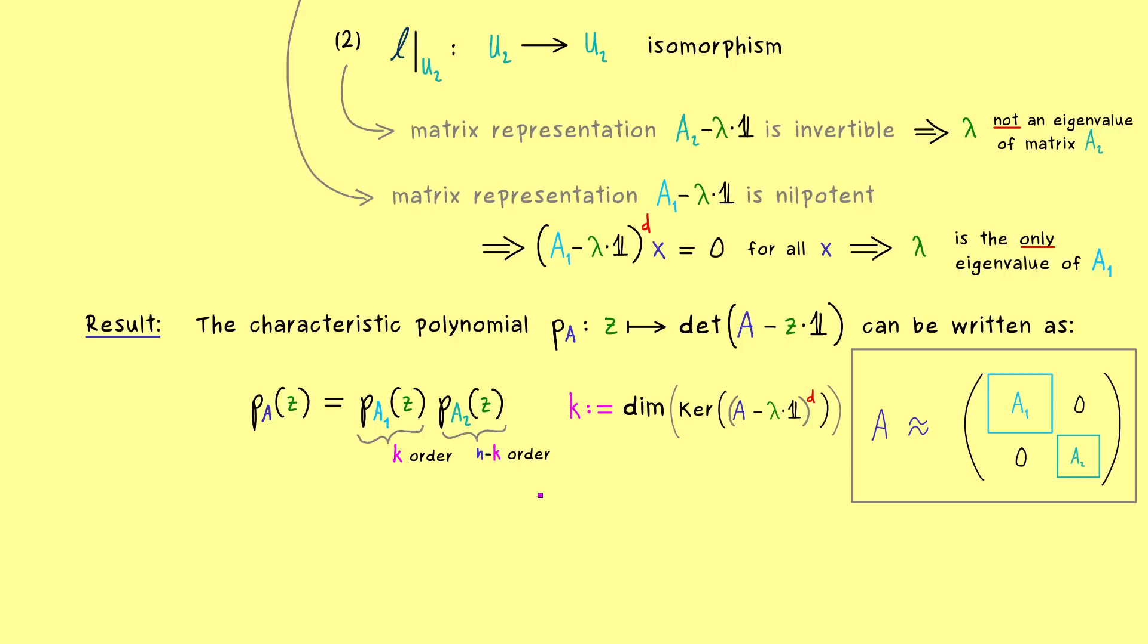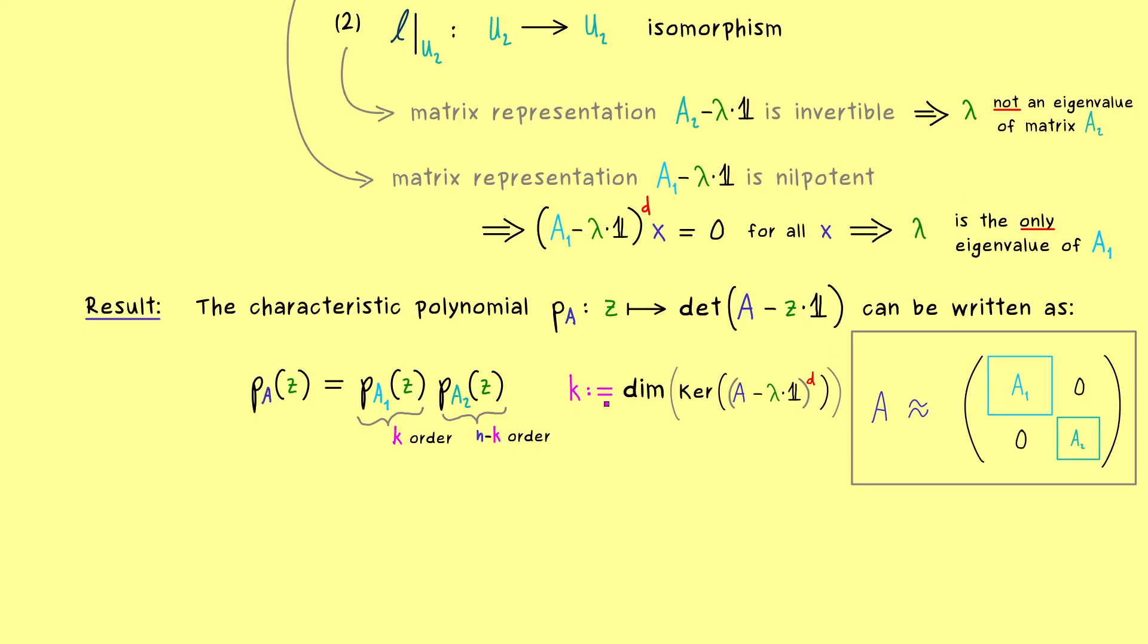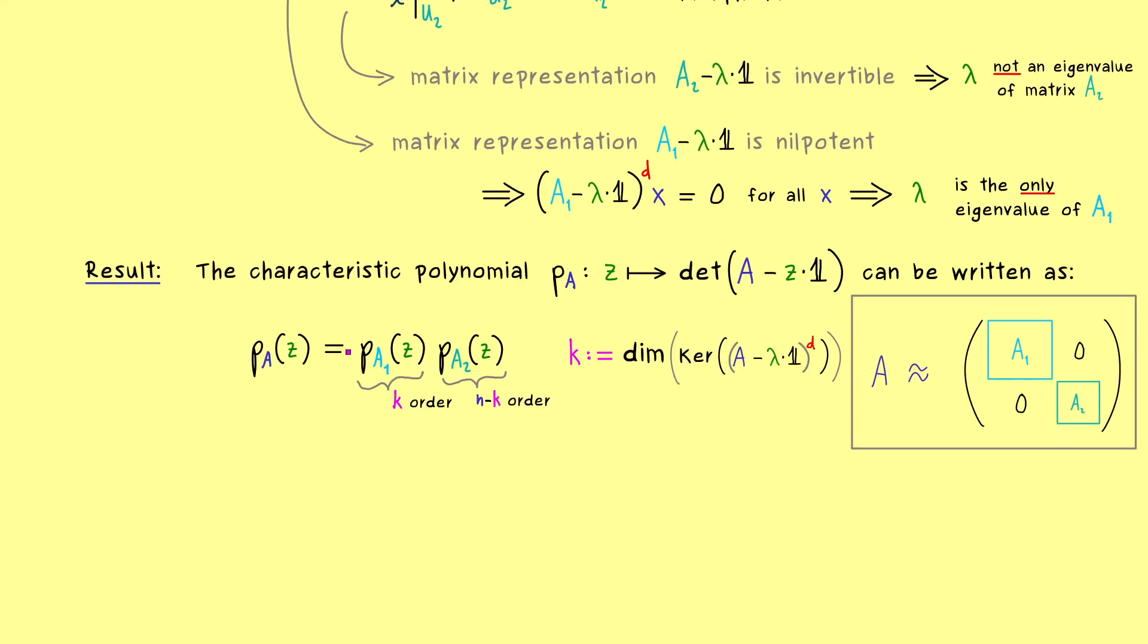So you could say the highest dimension we can get with the generalized eigenspaces of lambda. And now we can bring everything together. What we already know about the eigenvalues of A1 and A2. So first we see lambda is definitely not a zero of our second characteristic polynomial here.